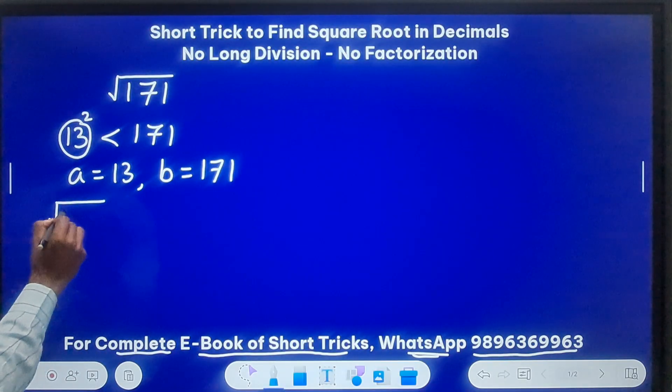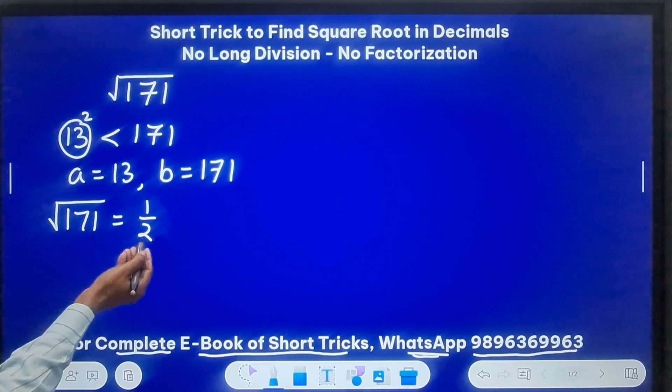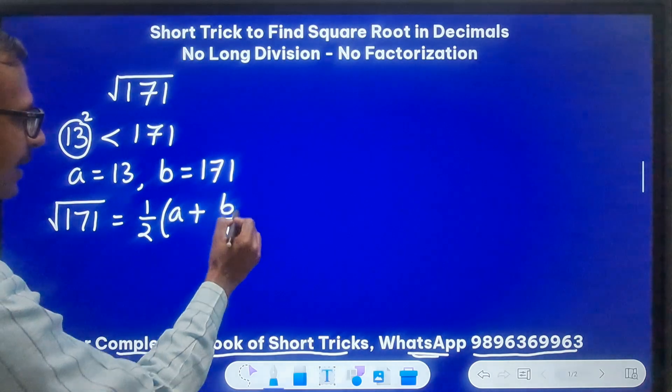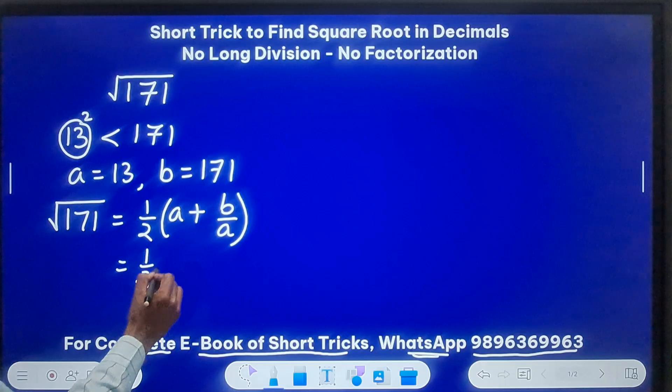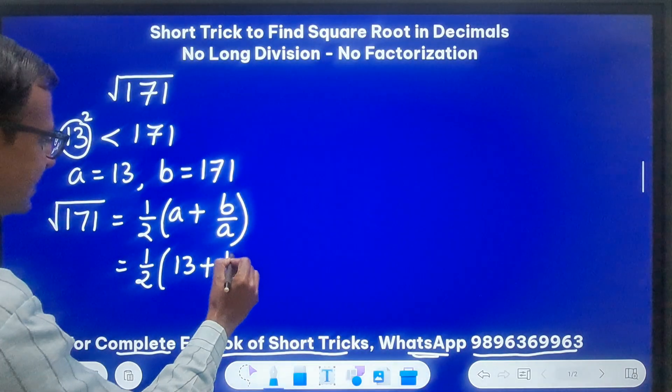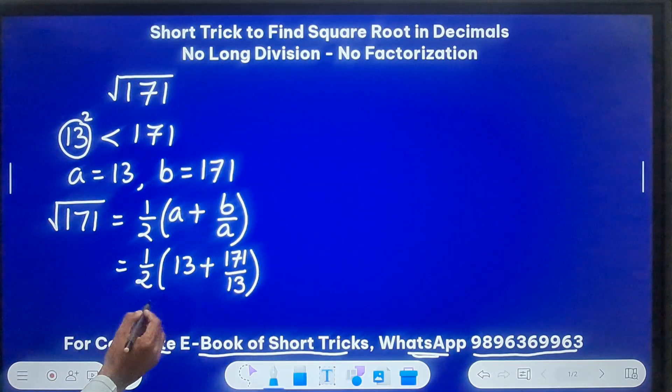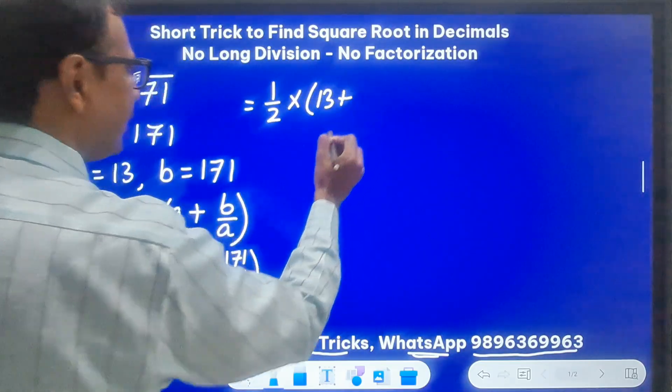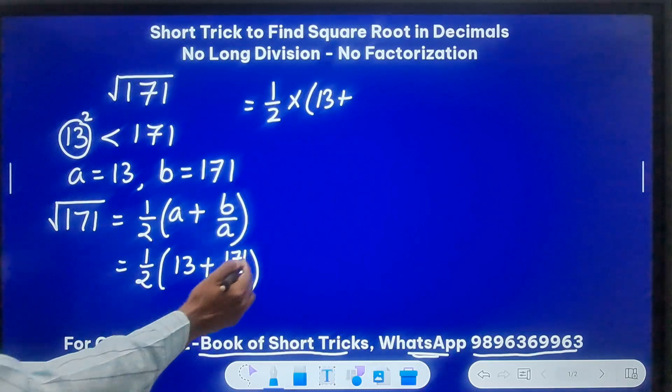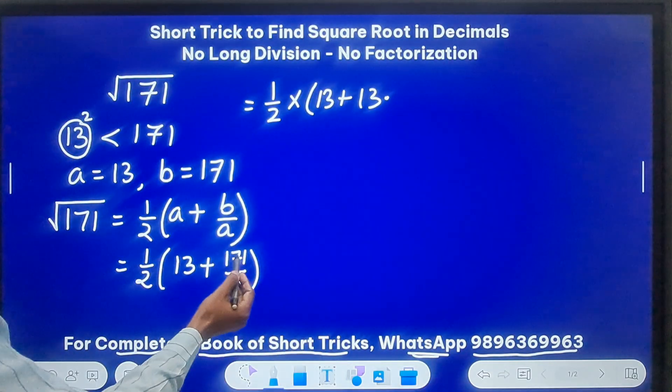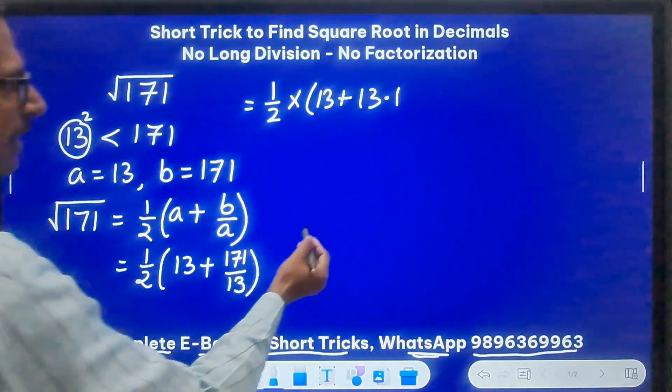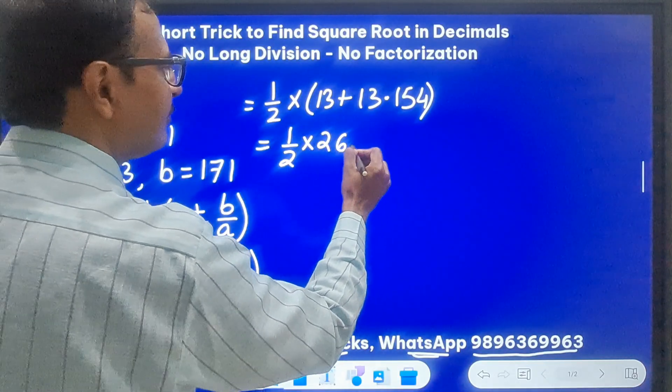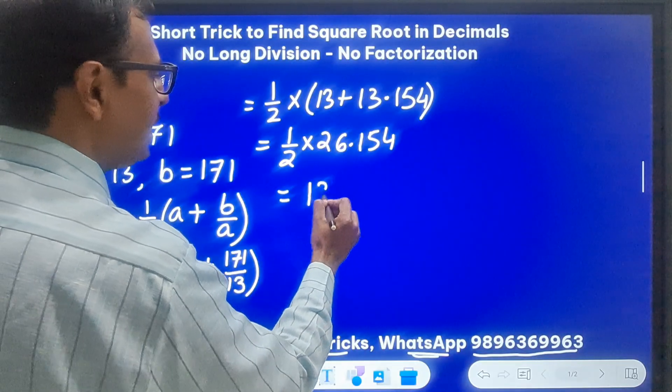Now the square root of 171 is half of - now this is the takeaway formula which you need to understand and remember - is a plus b upon a. Do this calculation and check what answer do you get. This is half of a is 13 plus b is 171 and divide that by 13. So what do I get here? This is half of 13 plus what? So if I divide 171 by 13, I'll get obviously 13 point, then 169 means 21 and 5 and approximately 4.